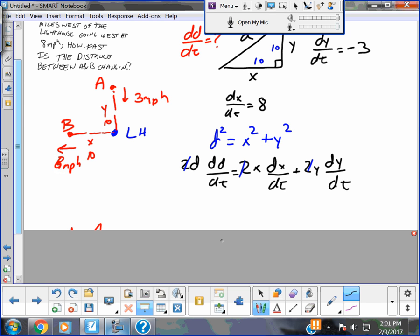All right, I get 10 square root of 2 times dD/dt equals, okay, X is 10, dX/dt is positive 8, Y is 10, dY/dt is negative 3.